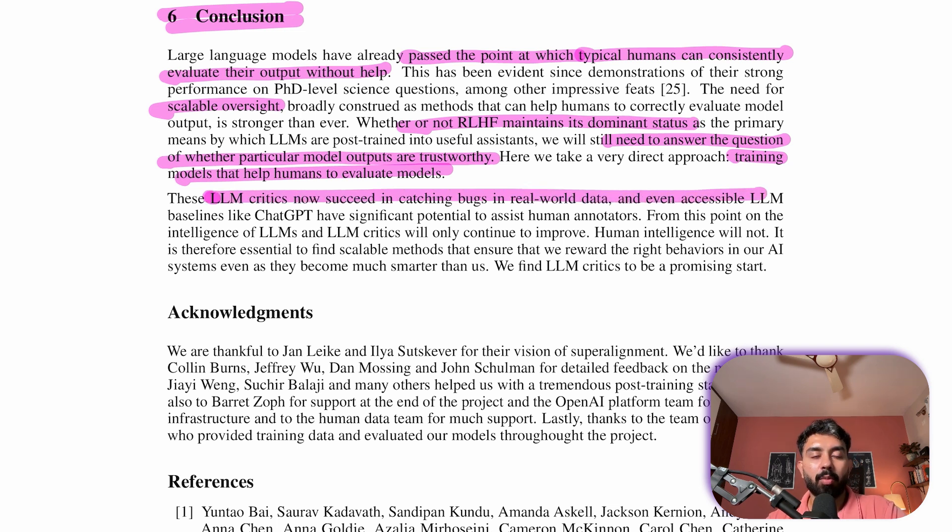So the approach here is straightforward: training models to help humans evaluate other models. And these LLM critics are already successful in catching bugs in real world data, and even accessible models like ChatGPT can significantly assist these human annotators and contractors. As LLM intelligence continues to improve, finding scalable methods to reward right behaviors in AI systems is going to be crucial, and LLM critics show promise as a starting point.